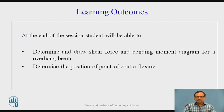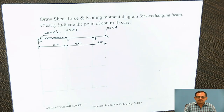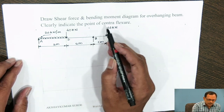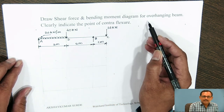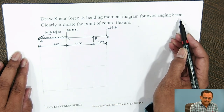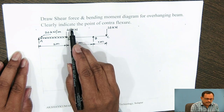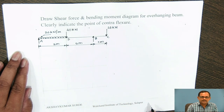At the end of the session, students will be able to determine and draw Shear Force and Bending Moment Diagram for an overhang beam, as well as they will determine the position of point of contra-flexure. So, draw Shear Force and Bending Moment Diagram for an overhang beam and indicate the point of contra-flexure.